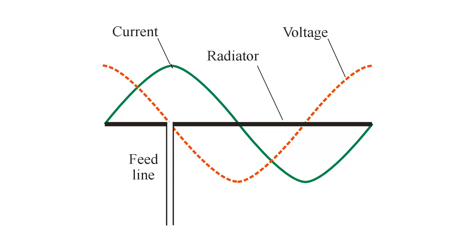But current feed always exists at a current maximum point in an antenna, and current feed is always attended by zero reactance at the feed point.